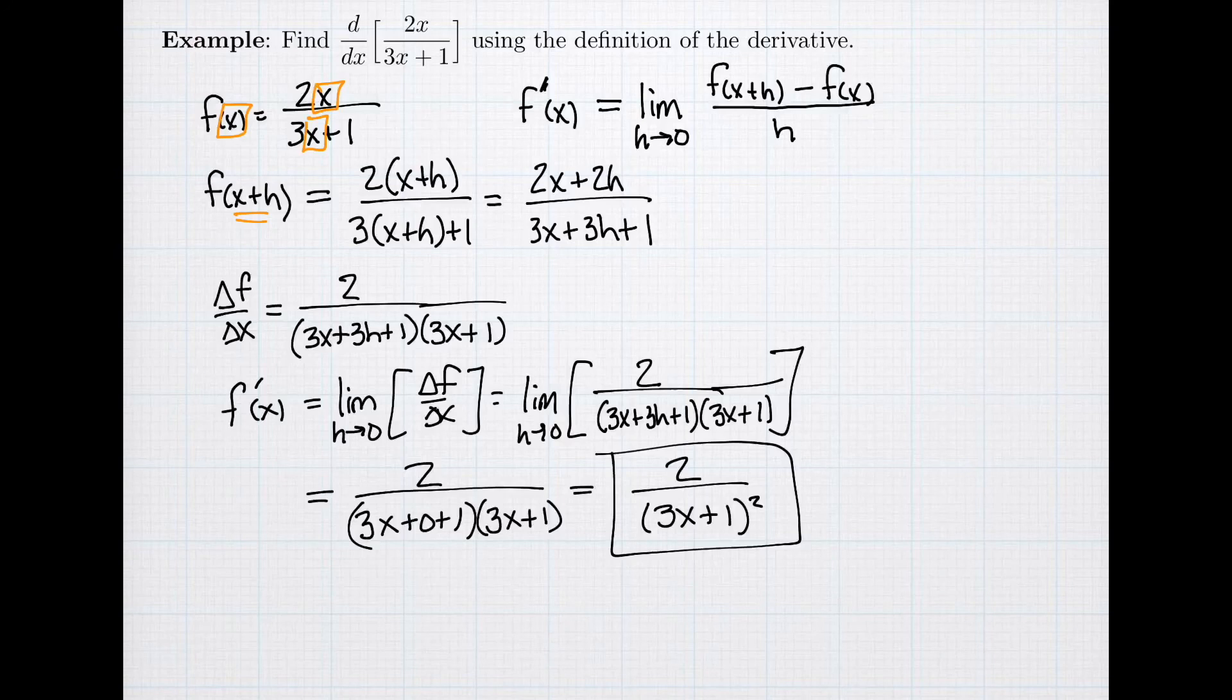So in summary, when we found the derivative using the definition, our first step was to find a simplified formula for the difference quotient. And when I did that, then I set the h, I let the h go to 0, and the formula that I get is the derivative. And that's what I'll use.